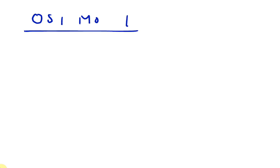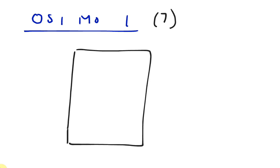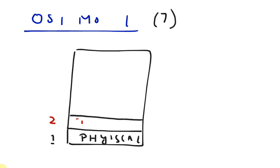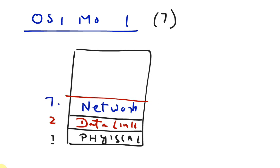Packet filter firewalls operate on the first three layers of the OSI model. We have already discussed the OSI model in previous tutorials, so if you are not familiar with the seven layers of OSI model please visit my previous tutorials. At the bottom, the first layer of the OSI model is called the physical layer, then we have the data link layer, and on number three we have the network layer. Packet filter firewalls operate on these three layers of the OSI model.